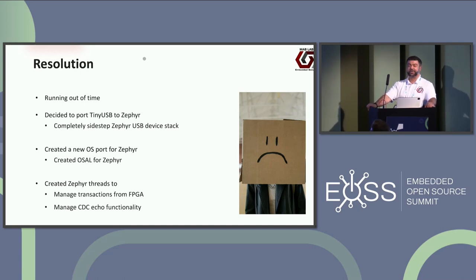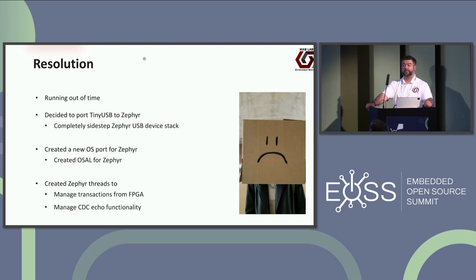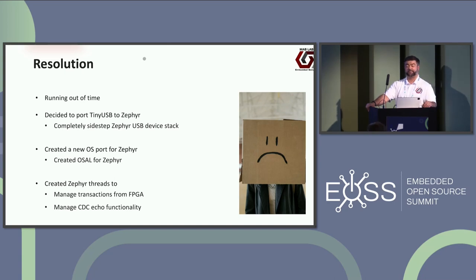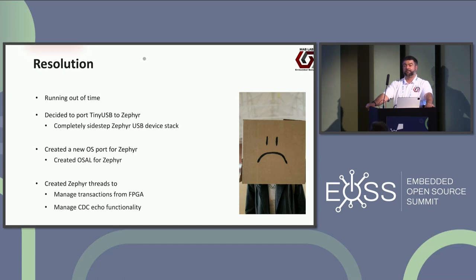We created a new OS port for Zephyr in TinyUSB — an OSAL layer. We implemented all the primitives TinyUSB uses for tasking, delaying, and getting ticks using Zephyr primitives. At the application level, we created two Zephyr threads: one to manage the actual device transaction from the FPGA side — setting everything up, deferring interrupts and acting on them — and another simple application thread to echo CDC data back, writing it to the Xilinx register. When we did that, it worked. We got a COM port on Windows, were able to echo back characters from the Xilinx implementation to the Windows host, and everything seemed fine.